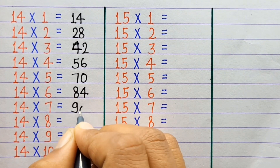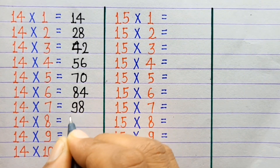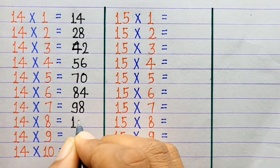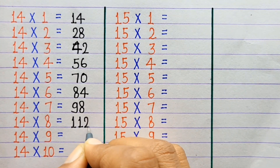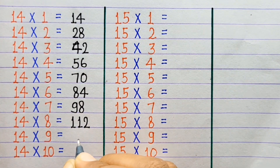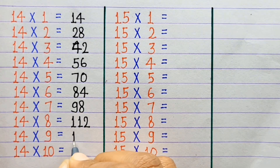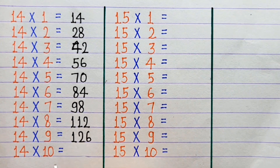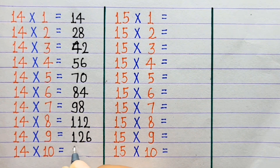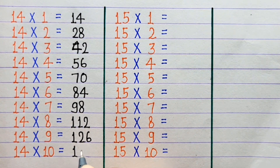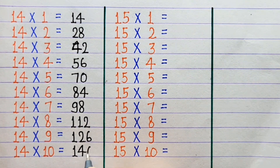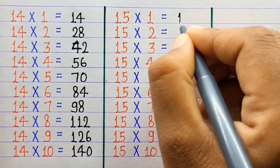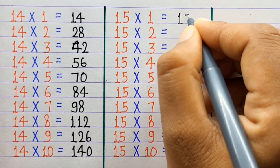14×6=84, 14×7=98, 14×8=112, 14×9=126, 14×10=140.